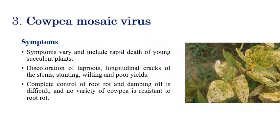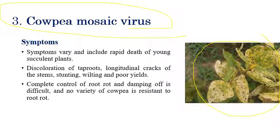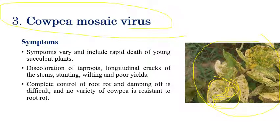Coming to the third disease, cowpea mosaic, which is caused by cowpea mosaic virus. If you see the leaves, yellowing is very common in all viral diseases as discussed earlier. We can also see rapid death of young succulent leaves. Alternate green and yellow patches can be observed, but mostly yellow color symptoms are seen. Discoloration can also be observed on tap roots. Cowpea mosaic virus infected plants also show stunting, wilting of roots, and poor yields.